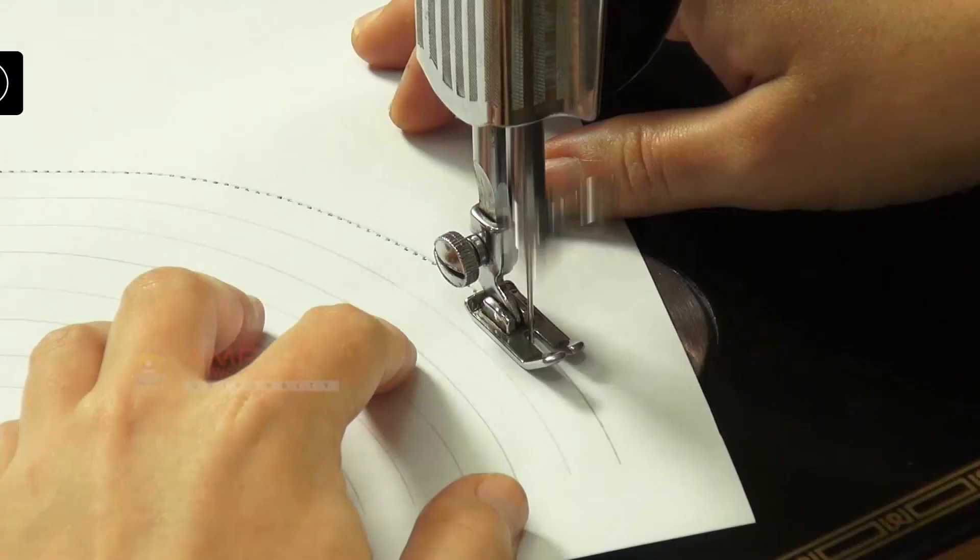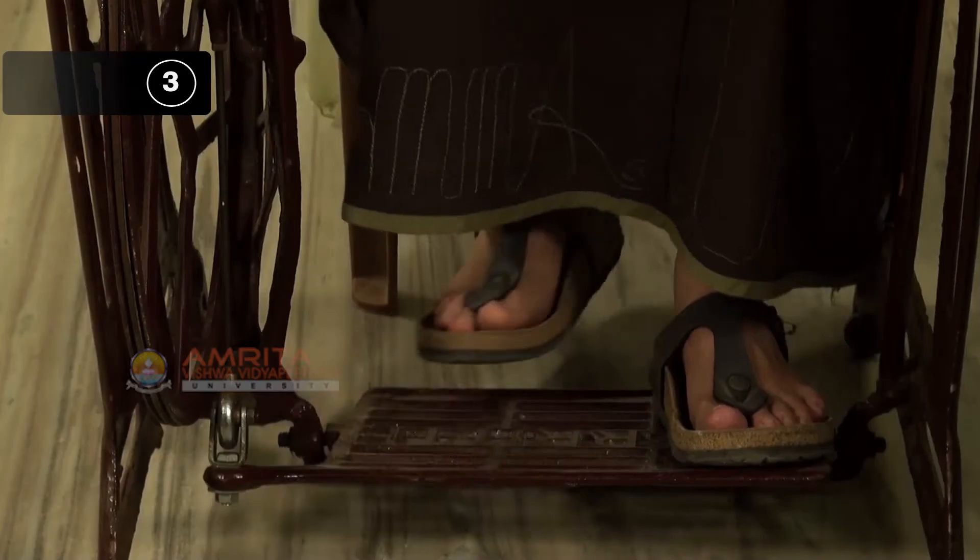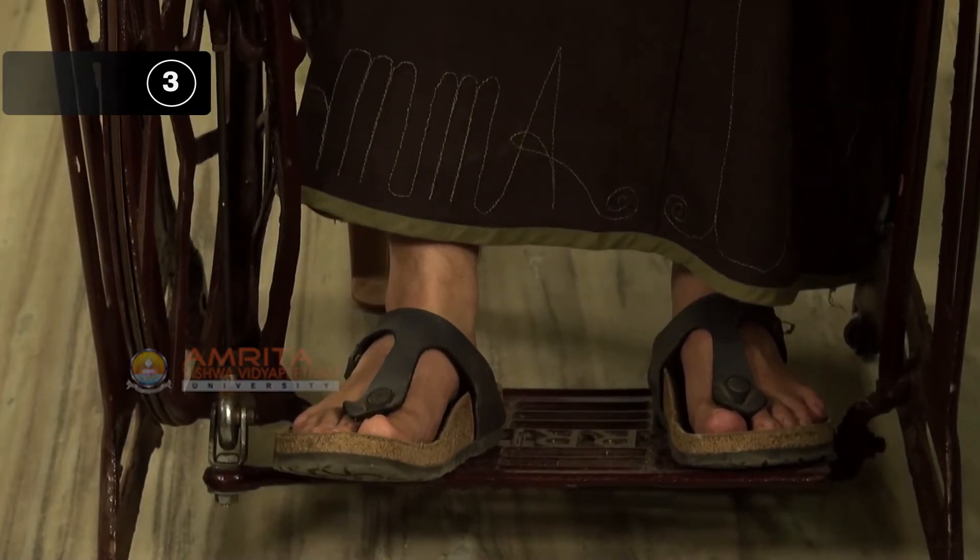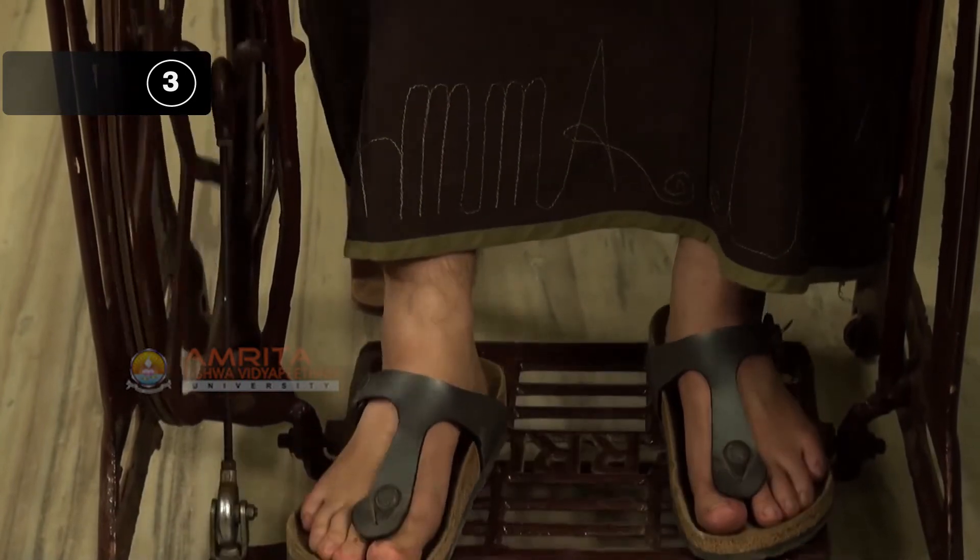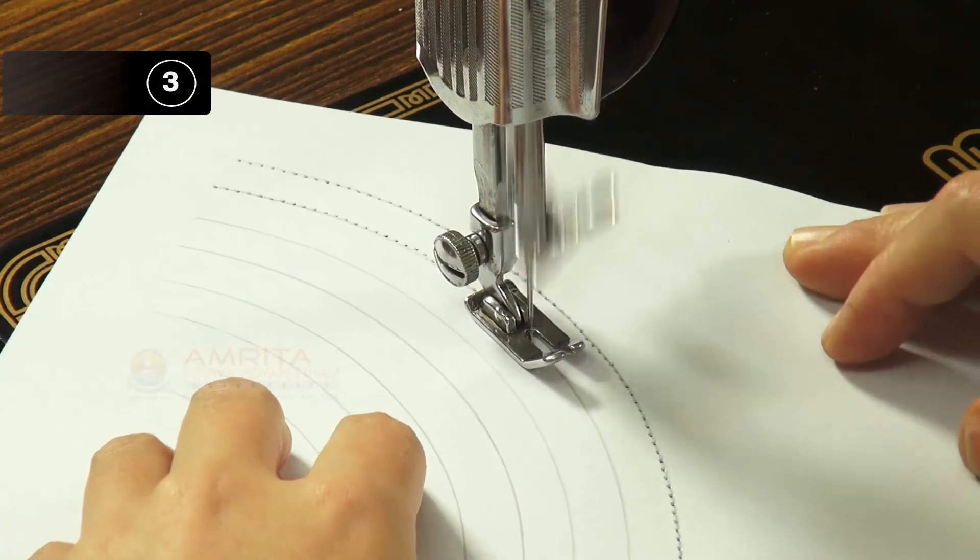Step 3: Move the treadle consistently and control the paper with both hands. Continue the movement of the treadle with your feet while stitching and control the paper with both hands.